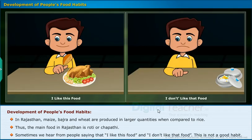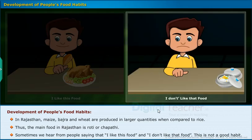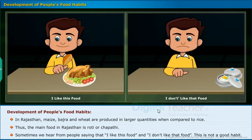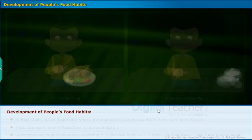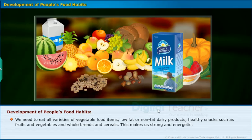Sometimes we hear people saying that I like this food and I don't like that food — this is not a good habit. We need to eat all varieties of vegetable food items, low-fat or non-fat dairy products, healthy snacks such as fruits and vegetables, and whole breads and cereals. This makes us strong and energetic.